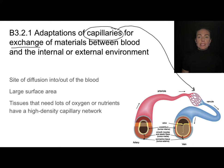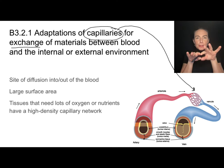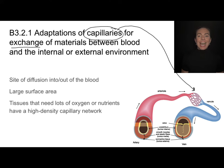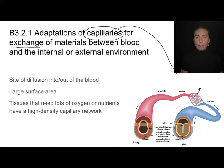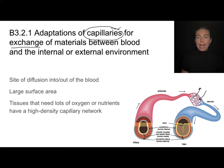Blood leaving the heart and going through the arteries branches off into smaller vessels — first arterioles and then capillaries — and this is where materials diffuse out of the blood and into tissues. Nutrients diffuse out of the capillaries into the surrounding area, and tissues produce waste products that diffuse back into the capillaries, then through the venules, into the veins, and back to the heart.